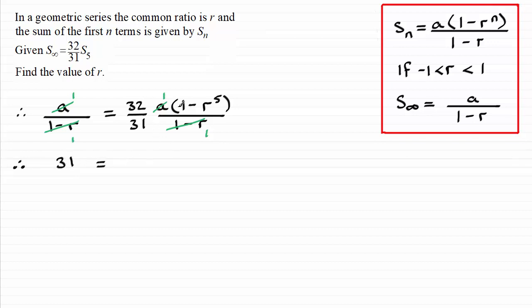and then I'm just left with 32 times this bracket. And if I expand that, I'm going to have 32 minus 32r to the power of five.